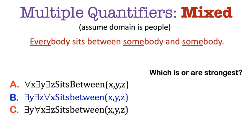Okay, the correct answer is B. This is the stronger one. So this is one of those cases where you are not allowed to reorder them because they're of a different type and they're in relation to each other. What B says is there are two special people, Y and Z, such that everybody sits between them.